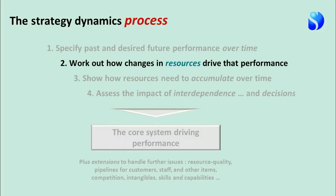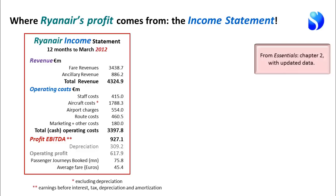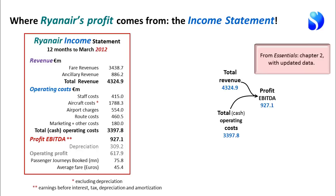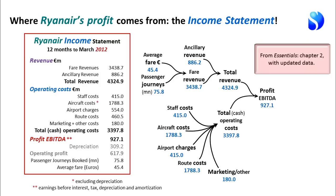The next step is to work out how performance depends on changes in the organization's resources. If it's profit we're trying to explain, we start from the income statement and lay out those numbers in a causal structure. The company's EBITDA profit comes from revenue minus cash operating costs. Revenue comes from fare revenue and ancillary revenue. Fare revenue comes from the number of passenger journeys multiplied by the average fare. On the cost side, costs come from staff, aircraft, airports, routes, marketing, and other items — essentially everything except depreciation.